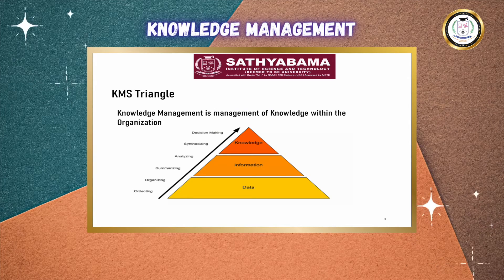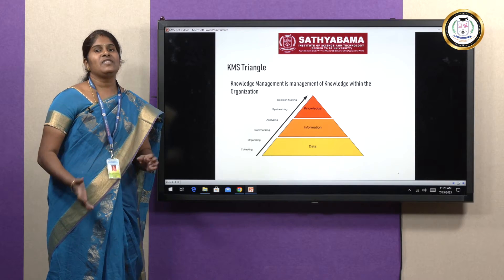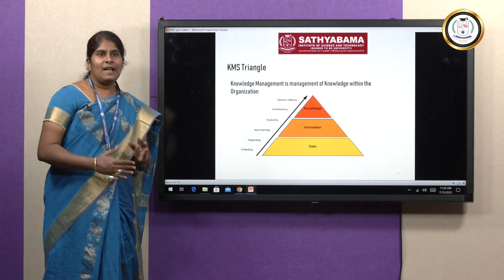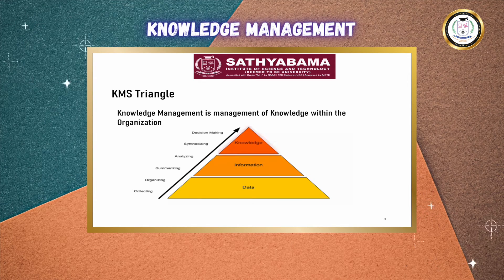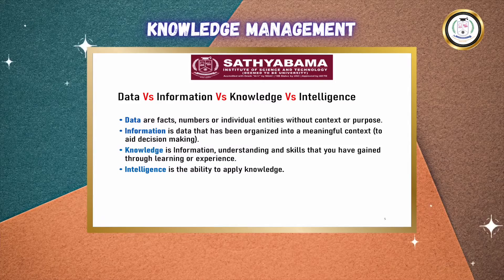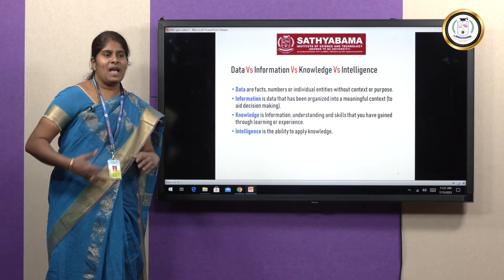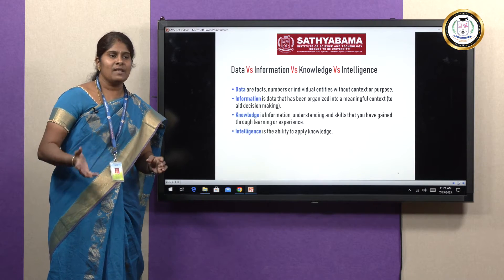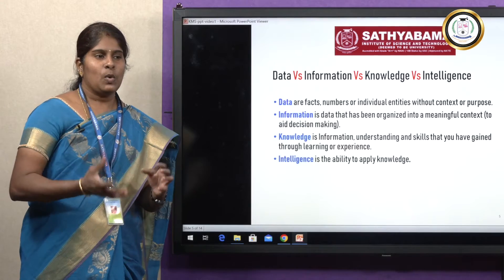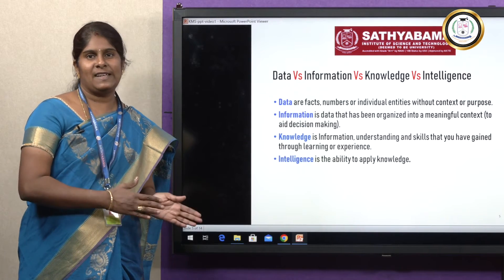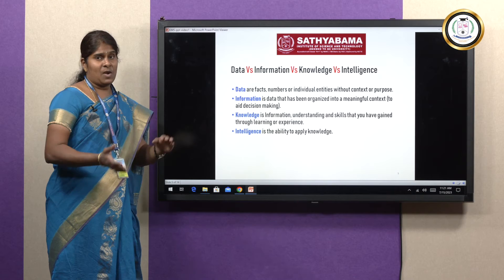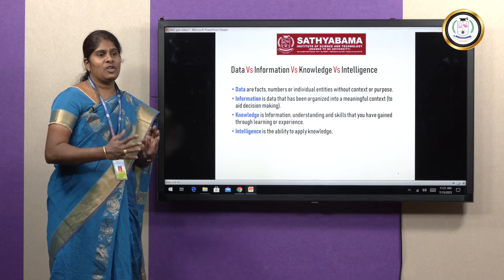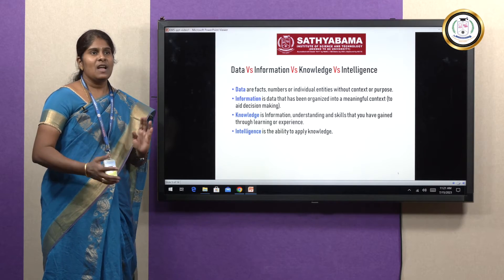Next, we are going to see about the knowledge triangle — how this knowledge is created. Knowledge is not created directly; it has three steps. This triangle has three layers: one is the data layer, next comes the information layer, and then the knowledge layer. Data is nothing but raw facts. We have plenty of data around us, but we can't use it as such — we have to convert this data into the form of information. Information is nothing but organizing and structuring this data, and that is called information.